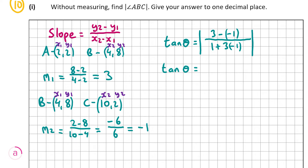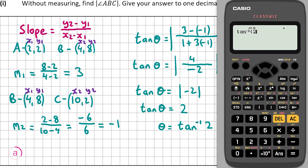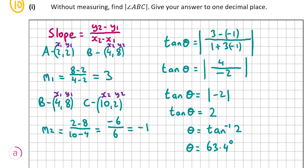Evaluating the right-hand side: 3 minus minus 1 is the same as 3 plus 1, so it's 4 over 1 plus 3 times minus 1. 3 times minus 1 is minus 3, so 1 minus 3 is minus 2. Remember, it's the absolute value, so 4 over minus 2 is minus 2, and the absolute value of minus 2 is just 2. Therefore, tan theta equals 2. So theta equals tan inverse of 2, which gives theta equal to 63.4 degrees. That's our angle ABC: 63.4 degrees.